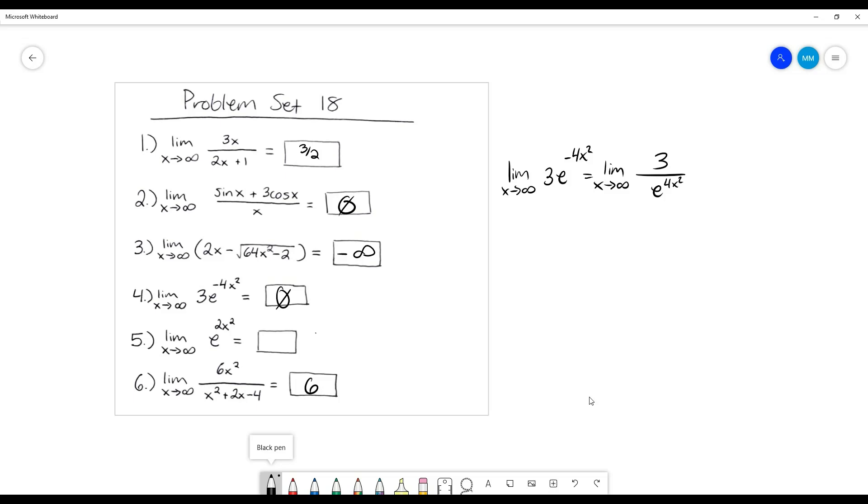And then number 5 is the same thing, except it's not a negative exponent, which means that this in itself is approaching infinity, because then this function is just getting larger and larger and larger forever.